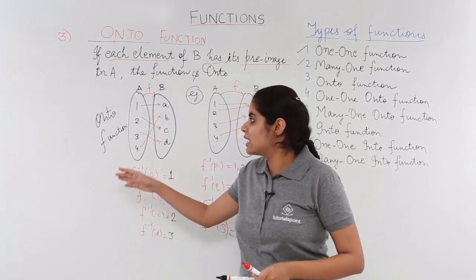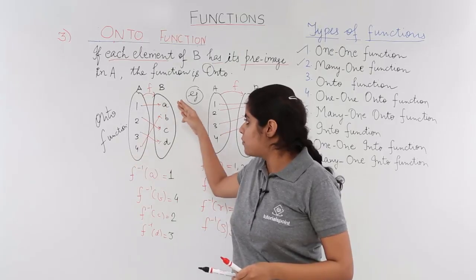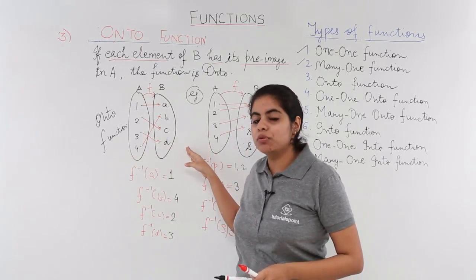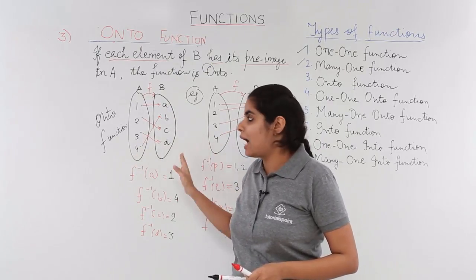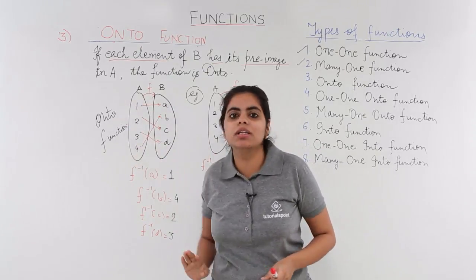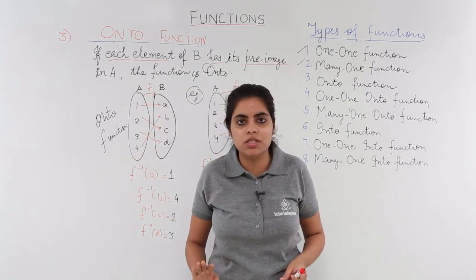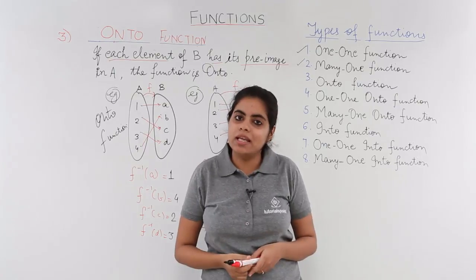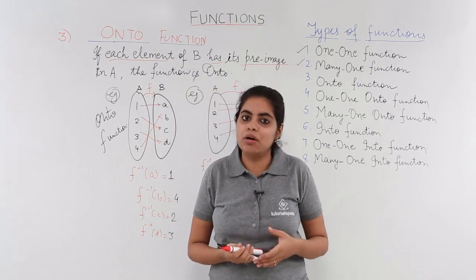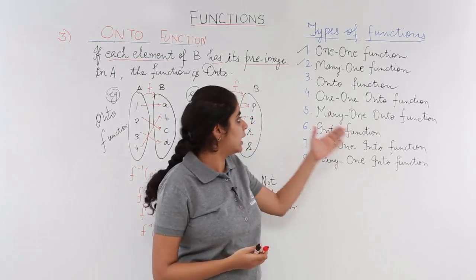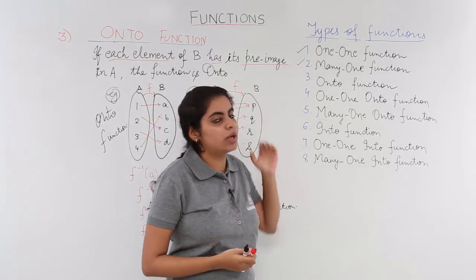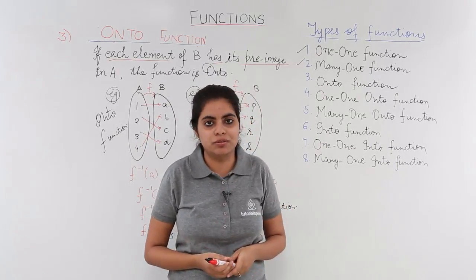In the first example, every element A, B, C, D had one or the other pre-images. In the next video we will be covering another type, which is the one-one onto function.